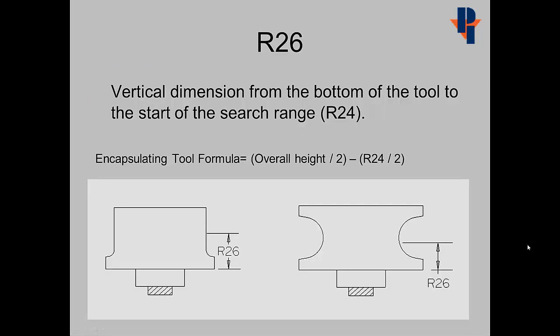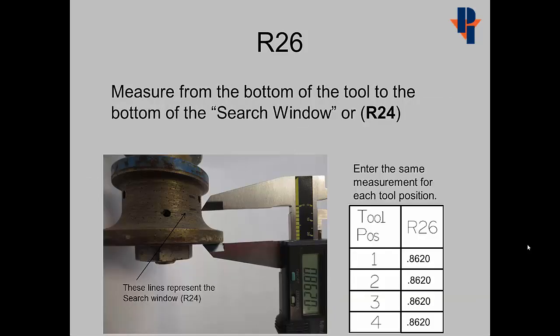R26 is a vertical dimension from the bottom of the tool to the bottom of the search window that was established in R24. It may be easiest to make two marks representing the search window on the tool, then use a caliper to measure from the bottom of the tool to the bottom mark made representing the search window. Enter the same measurement for each of the four tool positions.